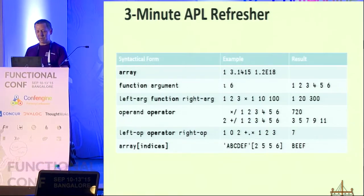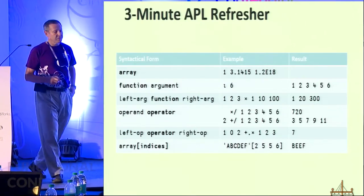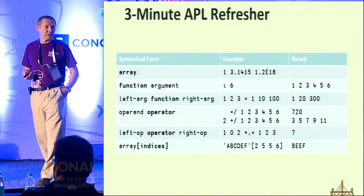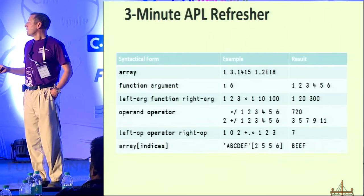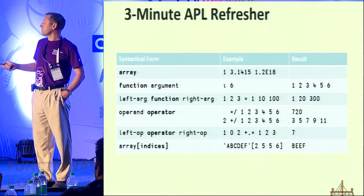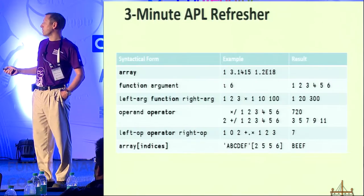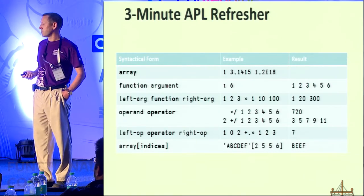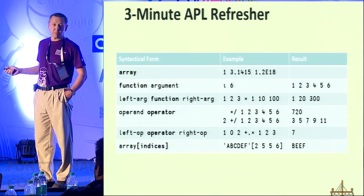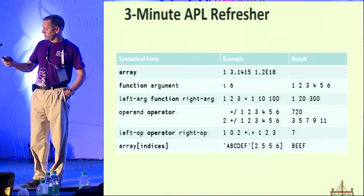Very brief APL refresher. The syntax of APL is really very simple — you can't even fill a complete page with the different forms. Either you have an array, typically created by juxtaposing items of data with spaces in between them. Or you have a function followed by one argument — this is the index generator, so IOTA 6 returns the numbers from 1 to 6. Or you have a function with a left argument and a right argument. The map is typically implicit in most of these functions — so this is adding item-wise on the left and right.